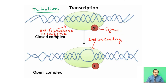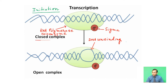During initiation of transcription, RNA polymerase holoenzyme binds with the promoter region and forms a closed complex. In this figure, we are showing the formation of the closed complex when RNA polymerase holoenzyme binds along with the sigma factor.